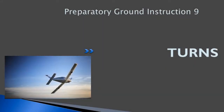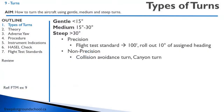Hello everyone, welcome to freepilotgroundschool.ca. This is our preparatory ground instruction for turns — our ninth exercise. You should have read through your flight training manual on exercise nine at this point. This is an important lesson; we don't want to be flying straight and level for our whole flight. We want to be making turns, so you're going to have to know how to turn the aircraft. The purpose of this lesson is to learn how to turn the aircraft.